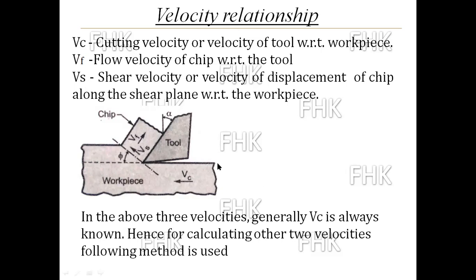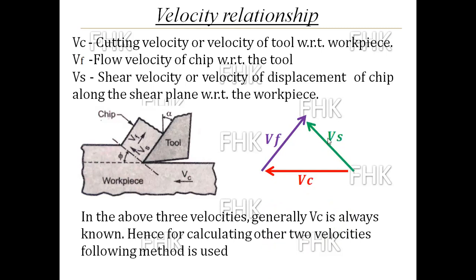The tool is moving from right towards the left for cutting the workpiece, so the direction of VC is from right to left. This velocity component is shown here in red color. The second one is flow velocity VF — the velocity of chip with respect to tool — which is moving in the upward direction as the chip moves upward on the face of the tool. VF is moving upward, and the third one is shear velocity VS, shown here in green color, also moving upward. So these three velocity components form the three sides of a triangle.